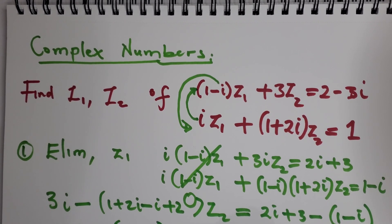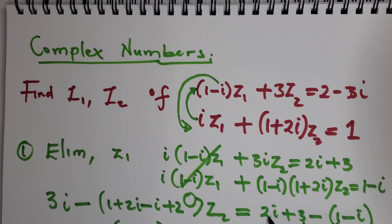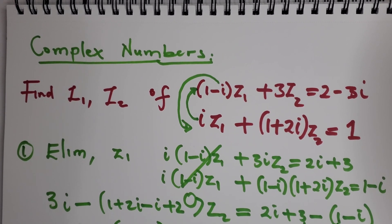Continuing to simplify: three i minus three in brackets, times z2, equals two plus three, plus three i. Cleaning it up further, we get two i minus three times z2 equals two plus three i.